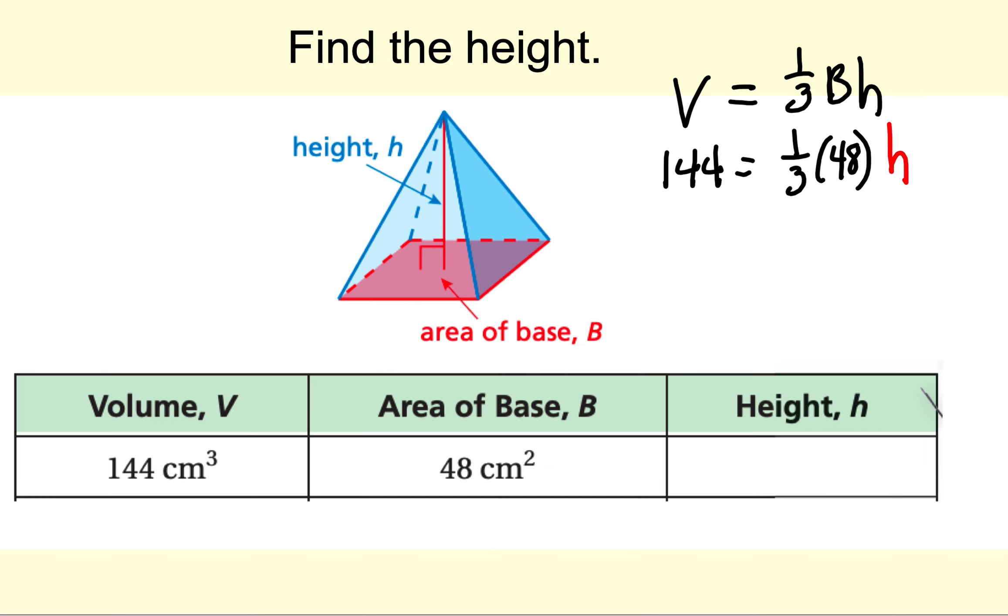Let me go ahead and do some reducing. And 3 goes in here once. 3 goes in here 16 times. Now I'm going to divide both sides by 16. So h is equal to... And 144 divided by 16 is 9. And so this answer is 9. And since this is a height, we just say centimeters.